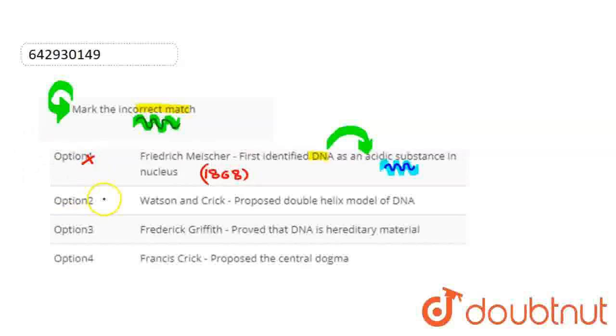So we have to see the second option, which is Watson and Crick. Watson and Crick proposed the double helix model of DNA. So this match is correct.